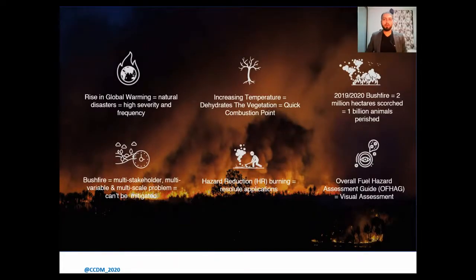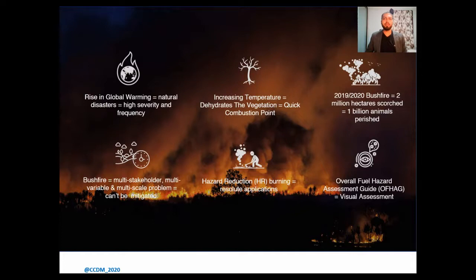The rising global warming has induced the world's climate to change abruptly, when natural disasters occur with high severity and high frequency. This costs lives, destroys infrastructure, disturbs established environmental cycles, and affects the health, well-being, and economic resilience. For example, the increasing temperature dehydrates the vegetation and brings the fuel closer to its combustion point, causing severe and frequent burns.